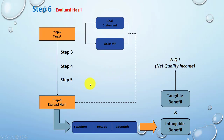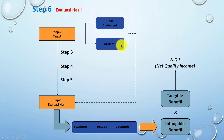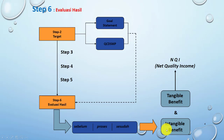Berikut adalah diagramnya. Kita akan melihat evaluasi hasil berdasarkan kategori Quality, Cost, Delivery, Safety, Moral, dan Productivity. Kita akan melihat bagaimana sebelum perbaikan, pada saat perbaikan, dan sesudah perbaikan hasilnya seperti apa.